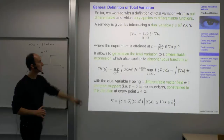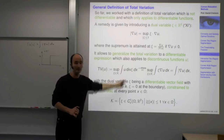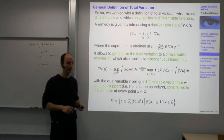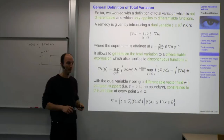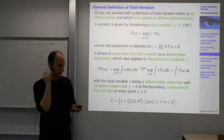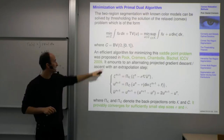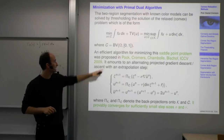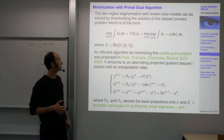This generalized total variation has two advantages over the naive form. First, it applies to non-differentiable functions — they just have to be integrable. Second, it is linear in U, and therefore differentiable with respect to U. This means we can compute derivatives with respect to U, making it more amenable to optimization with gradient-based techniques, such as the primal-dual algorithm introduced last time.